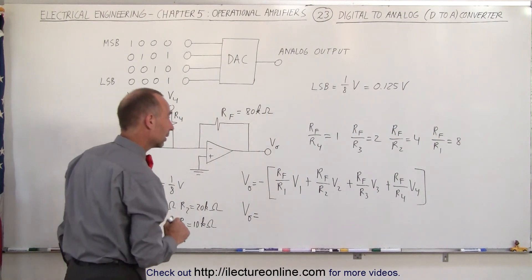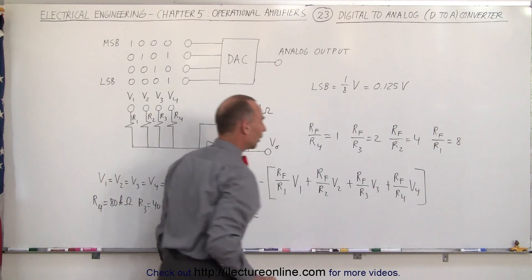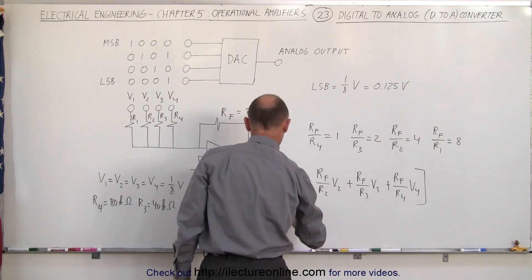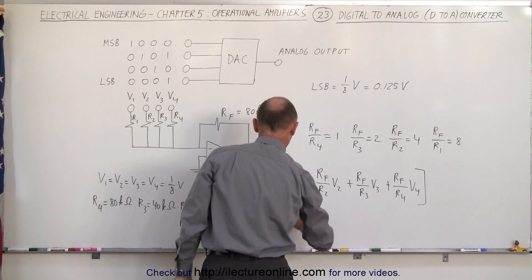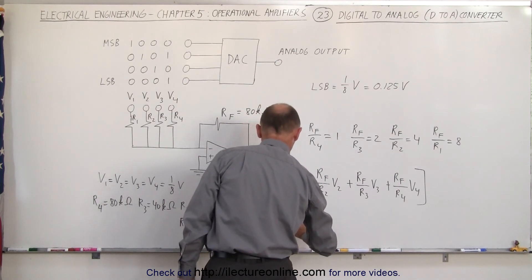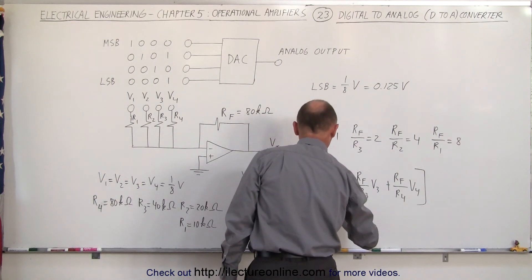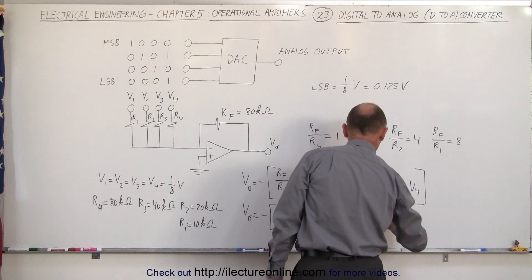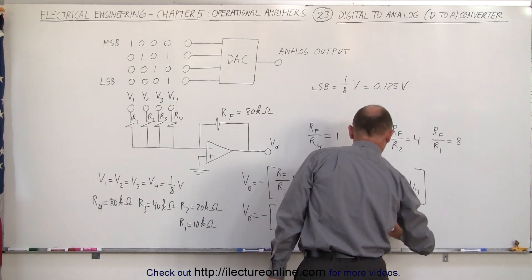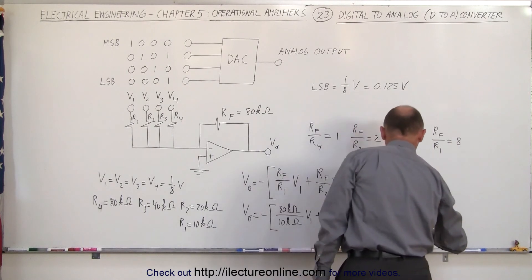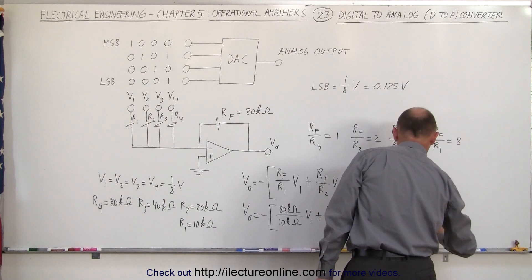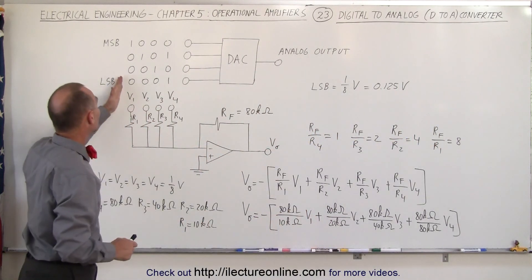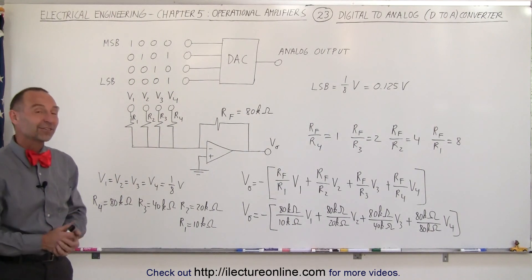In such a way that we have an 8 to 1 ratio between RF and R1. So plug in those values in here, we get V output is equal to the negative of RF divided by R1, that would be 80 kiloohms divided by 10 kiloohms times V1 plus 80 kiloohms divided by 20 kiloohms times V2 plus 80 kiloohms divided by 40 kiloohms times V3 plus 80 kiloohms divided by 80 kiloohms, that's a one to one ratio, times V4. And that's how we can convert the signals from a digital to an analog signal using operational amplifiers. And that's how it's done.